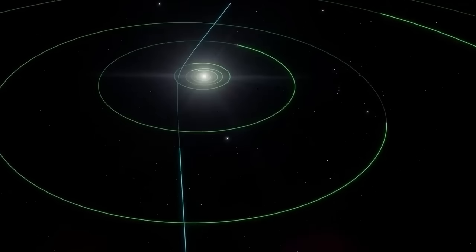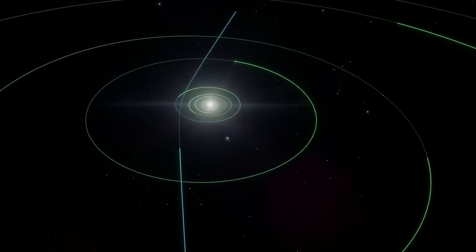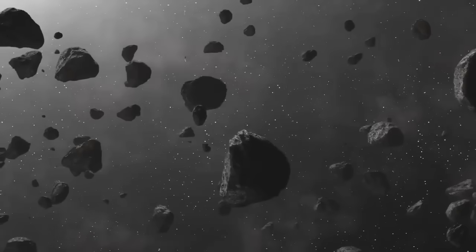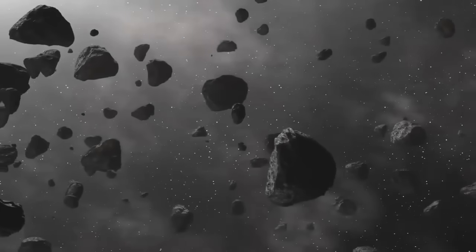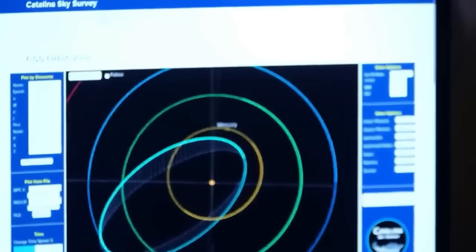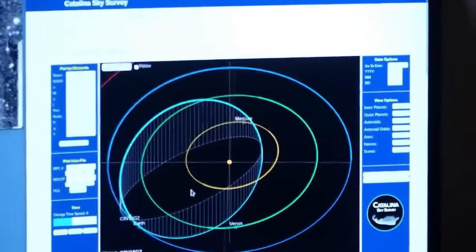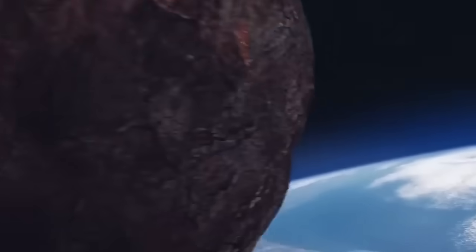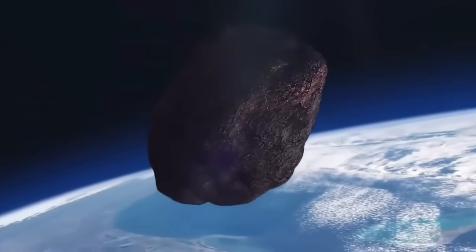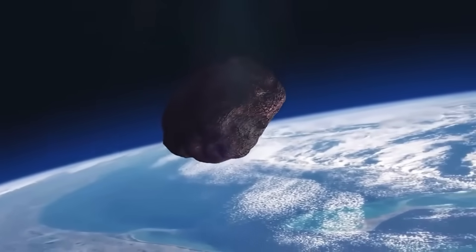As comet 3I Atlas continues its journey through our solar system, accompanied by its nine undetectable companions, humanity stands at a crossroads of understanding. The initial alarms raised by figures like Michio Kaku, while amplified by popular interest, serve as a vital wake-up call. They remind us that the universe is far stranger and potentially far more populated than our current scientific models suggest.